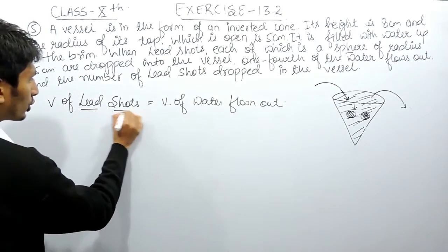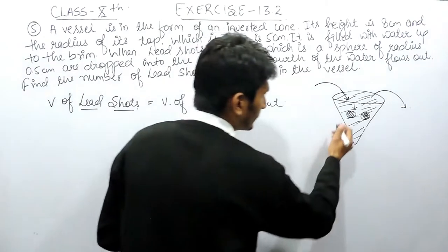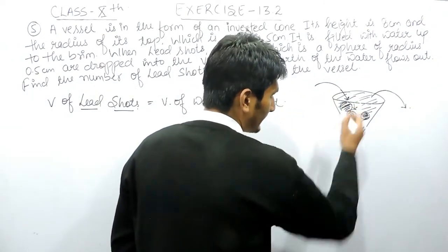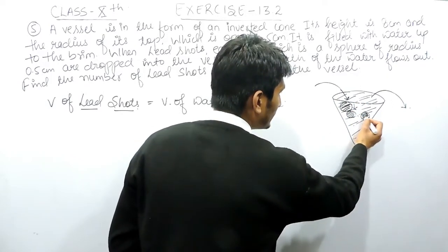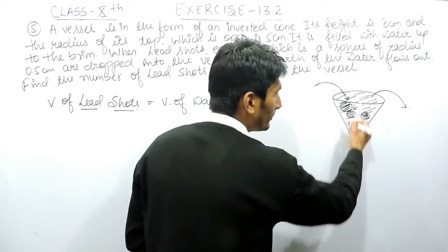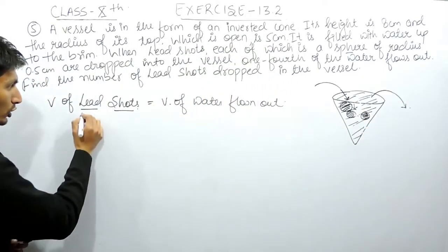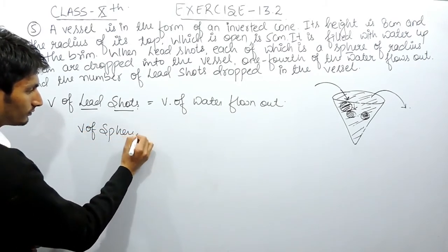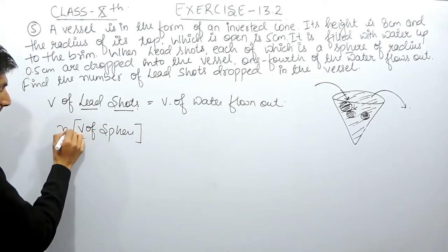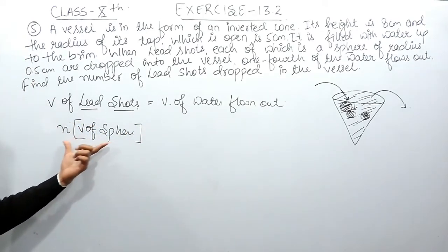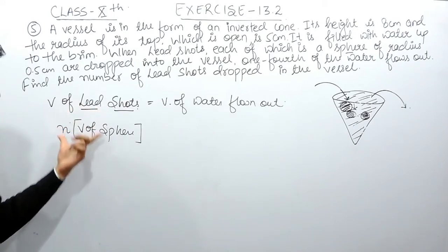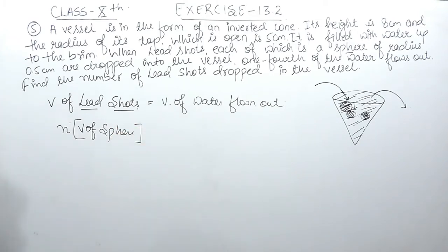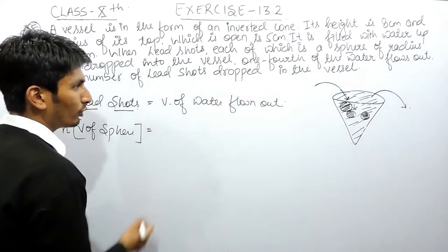The lead shots are spherical and there are n numbers of lead shots placed inside this container. All lead shots are of the same size, so the volume of all lead shots equals the volume of one sphere multiplied by the number n of spheres inside this vessel. And this will equal the volume of water flowed out.